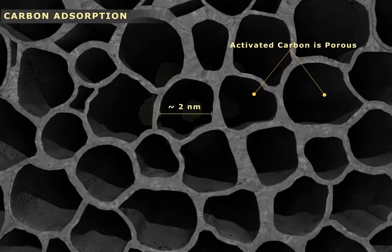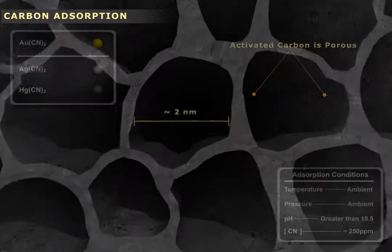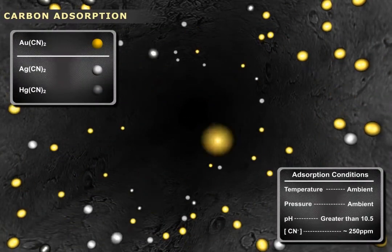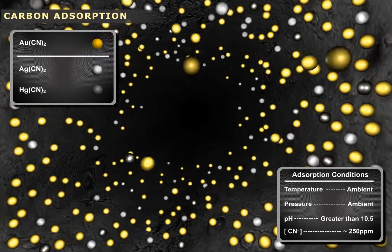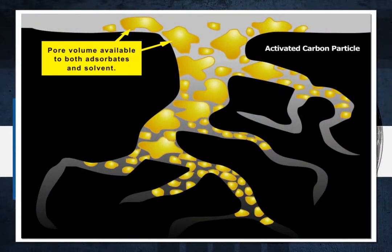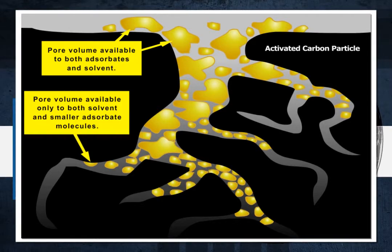The concentrating process is based on the concept of adsorption in which complex gold, silver, and if present mercury molecules are adsorbed or adhered onto small millimeter-sized particles of activated carbon.